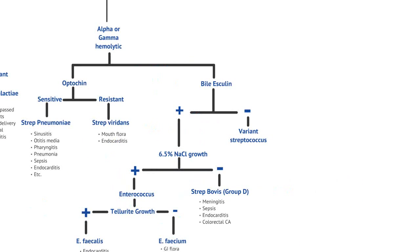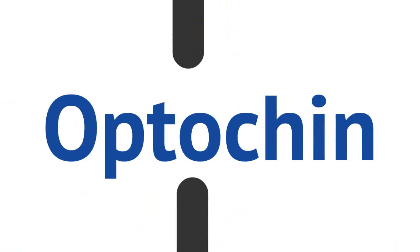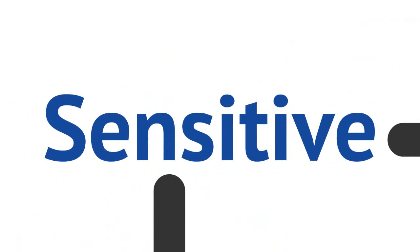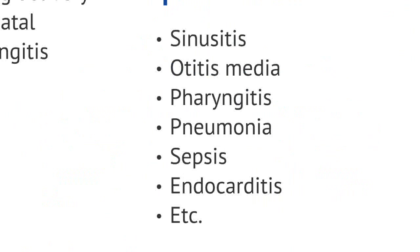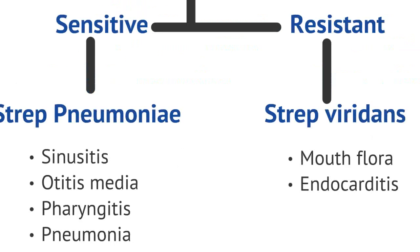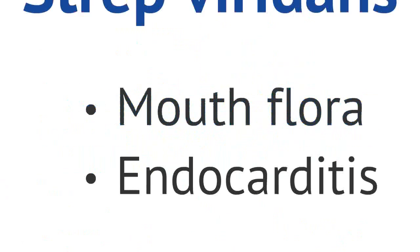Now let's talk about alpha or gamma hemolytic strep. There are a lot of organisms in this category. Using the optochin test, gram-positive cocci that are alpha hemolytic and optochin-sensitive is called Strep pneumoniae. Strep pneumoniae is commonly implicated in sinusitis, otitis media, pharyngitis, pneumonia, sepsis, and endocarditis, as well as many other infections. It's a very ubiquitous organism. The optochin-resistant organism is called Strep viridans — it's part of the mouth flora but can contribute to endocarditis.